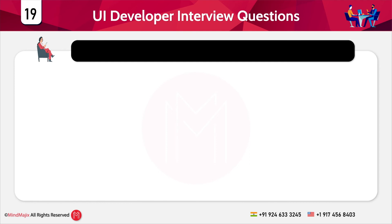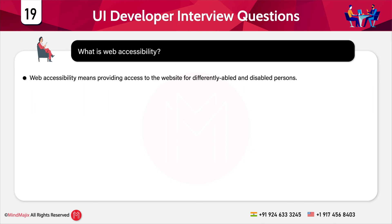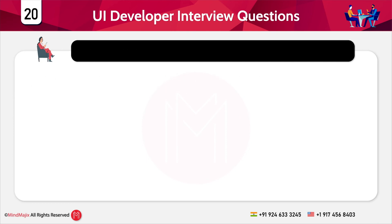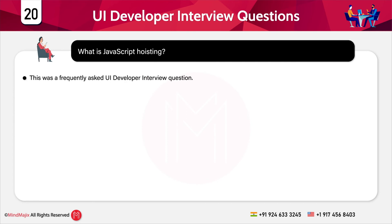The next question is: what is web accessibility? Web accessibility means providing access to the website for differently-abled and disabled persons, so that they can understand, navigate, and interact with the web easily.